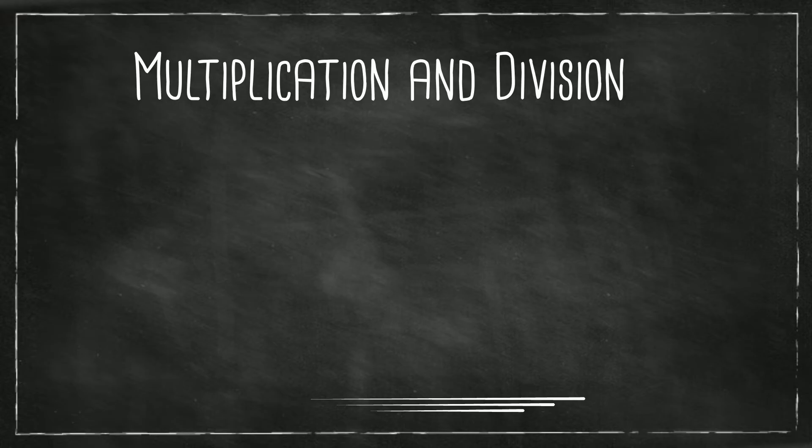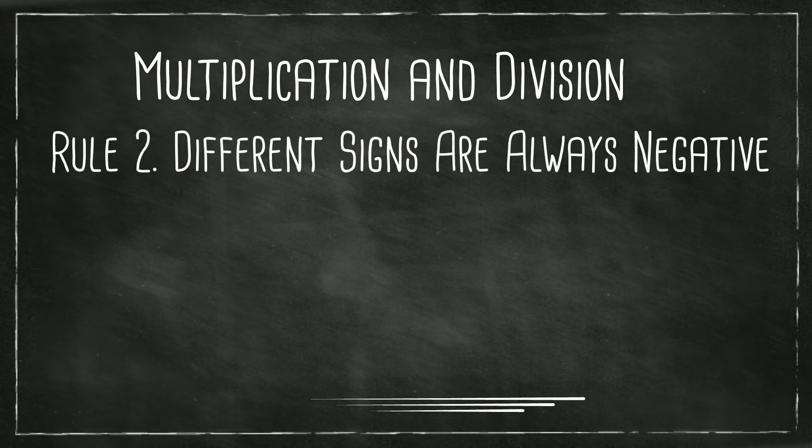Now the next rule for multiplication and division: different signs are always negative. 4 times negative 3 equals negative 12. 4 divided by negative 2 equals negative 2.